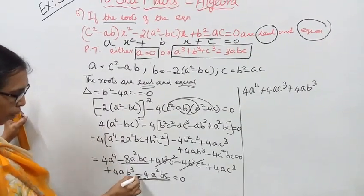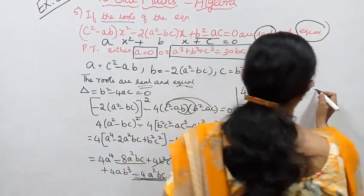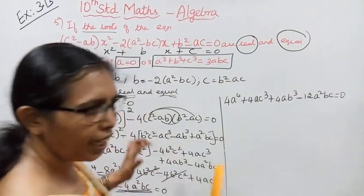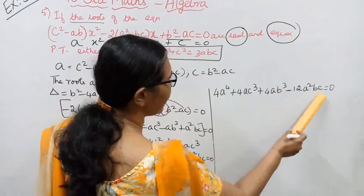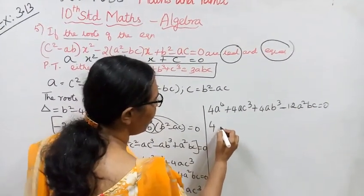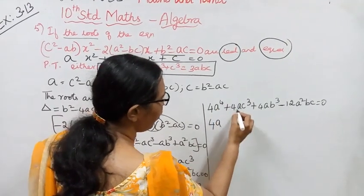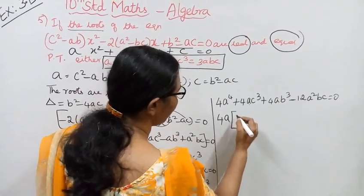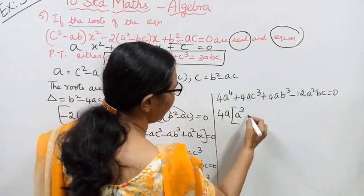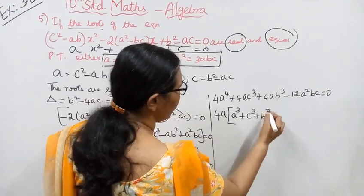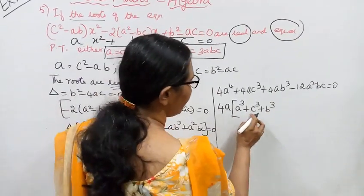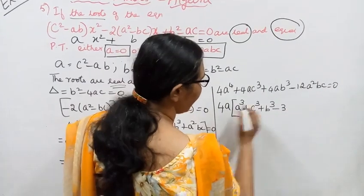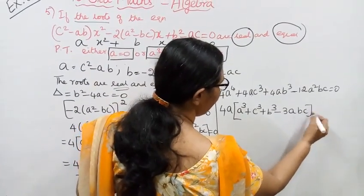Factoring out 4a: 4a(a³ + b³ + c³ - 3abc) = 0. So either 4a = 0, meaning a = 0, or a³ + c³ + b³ - 3abc = 0.